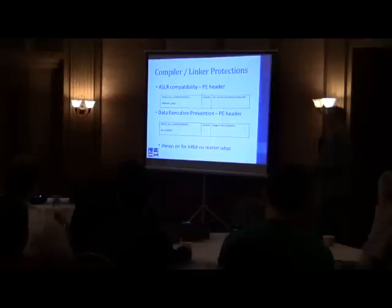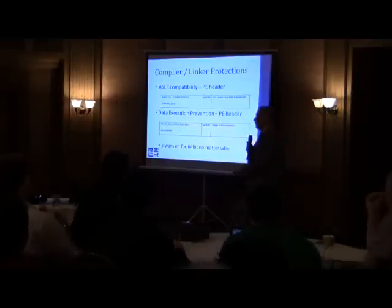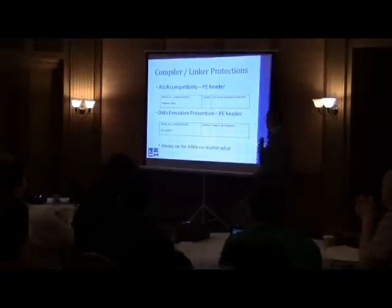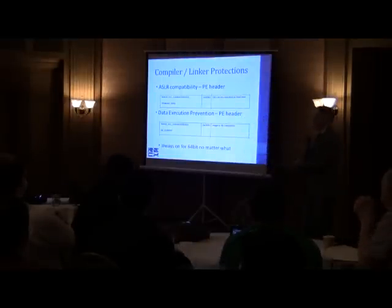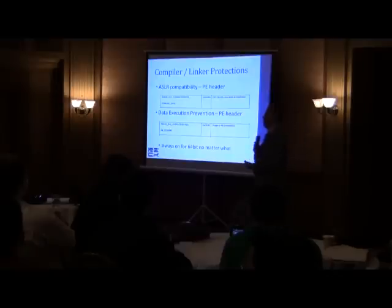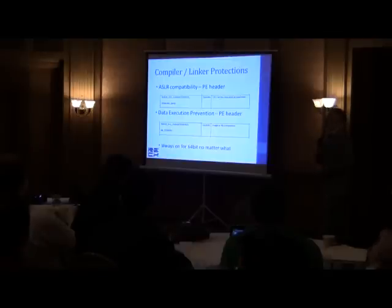Address space layout randomization is stamped in the PE header, so it's very trivial to identify. You can see this in dumpbin — if you do dumpbin /all, it will dump the DLL characteristics field, and they now have friendly name conversion so it will explain if ASLR and DEP are enabled.